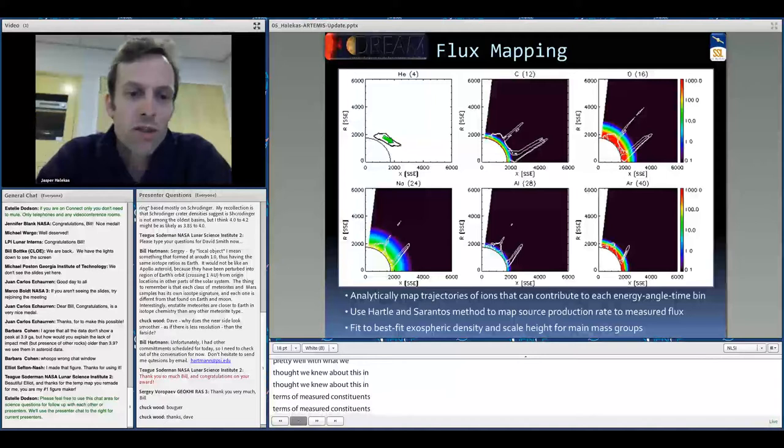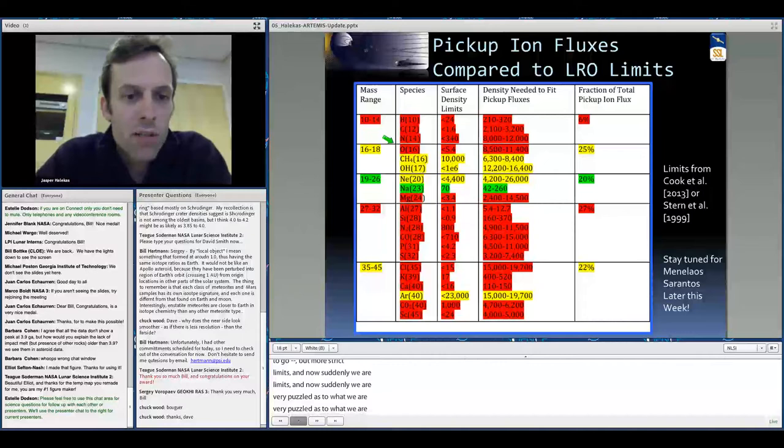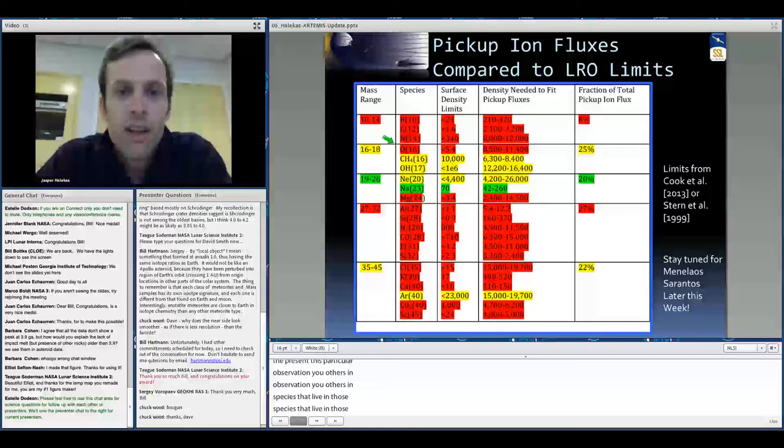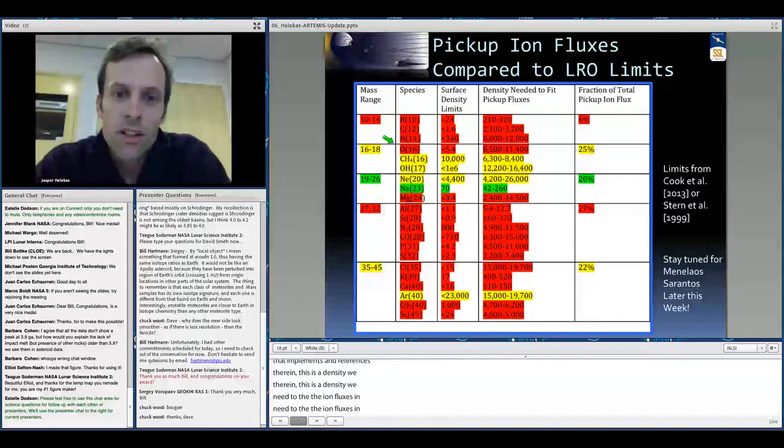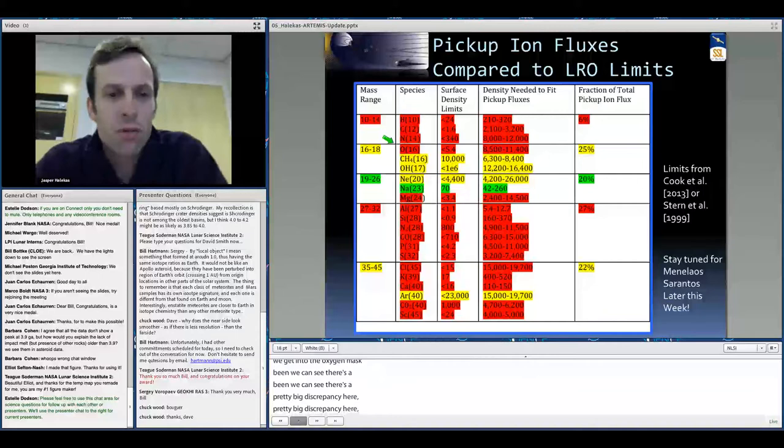Then LRO had to go and come out with new upper limits, much more stringent upper limits on a bunch of species, and now suddenly we're very puzzled as to what we're actually seeing with Artemis. So here's a big table, which I don't expect you to completely digest, but what you're seeing here is the five different mass bins that we fit this particular Artemis observation to. These are some species that live in those mass bins, and these are the surface density limits from Cook et al., or from the older Stern et al., and references therein. This is the density we'd need to fit the pickup ion fluxes in that mass bin if it was all from one particular species. What you'll see is that these numbers are a lot bigger than these numbers in almost all cases. Don't worry too much about this low mass bin. That's only a few percent of the pickup ion flux, so I don't make too much of that. But once we get up into the oxygen mass bin, you can see we have a pretty big discrepancy here. A factor of a thousand more oxygen would be needed to explain our observations if that was all that there was.